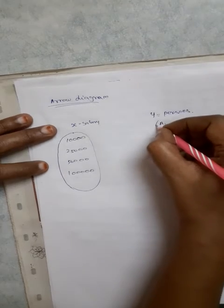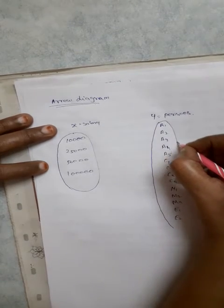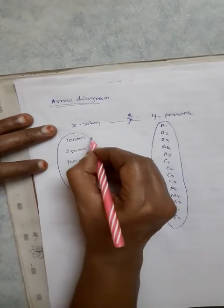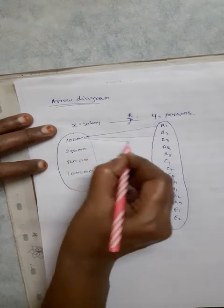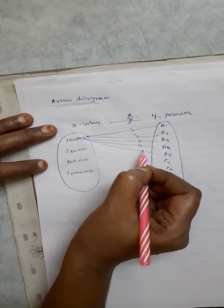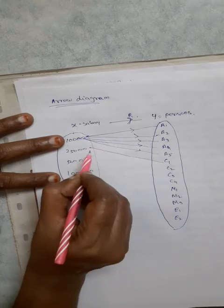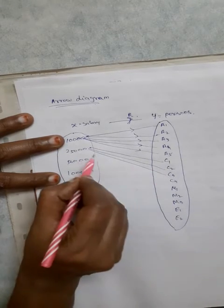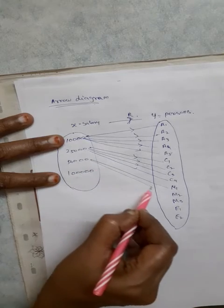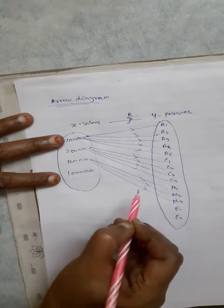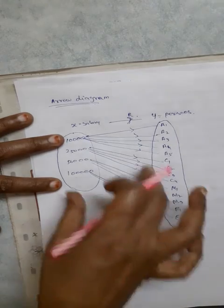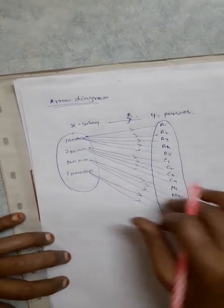Now we're going to map the relationship. Let's see how different people connect. 10,000 goes to A1, A2, A3, A4, A5 assistants. 25,000 is for clerks. 50,000 is for managers, three managers. One lakh is for executive officers. This is an arrow diagram.